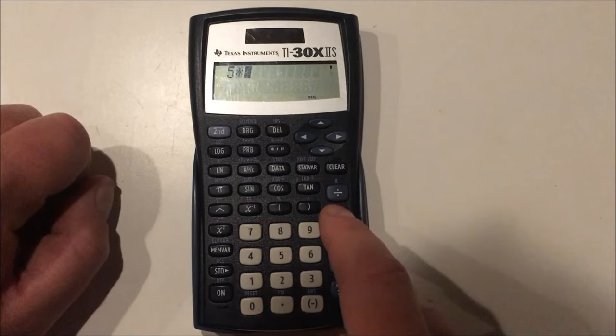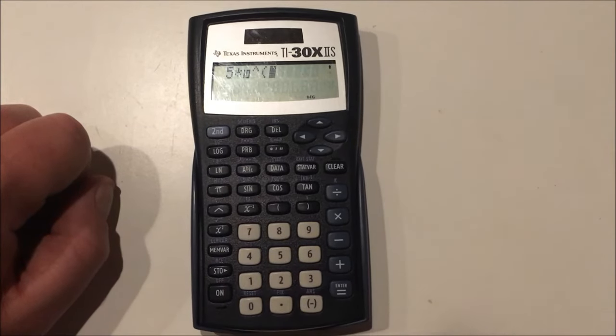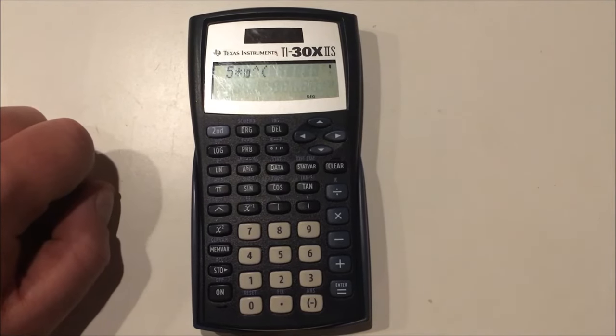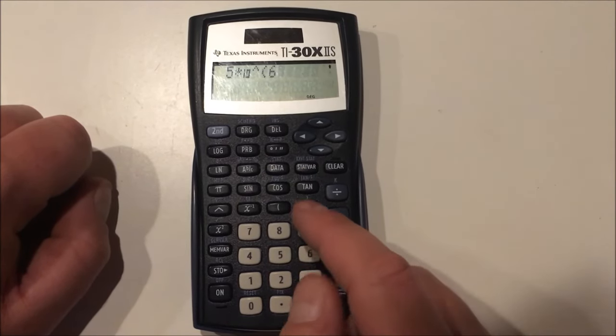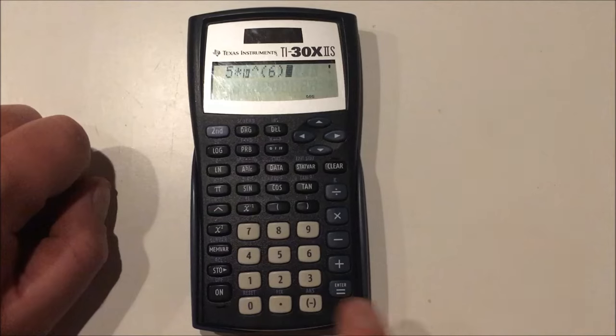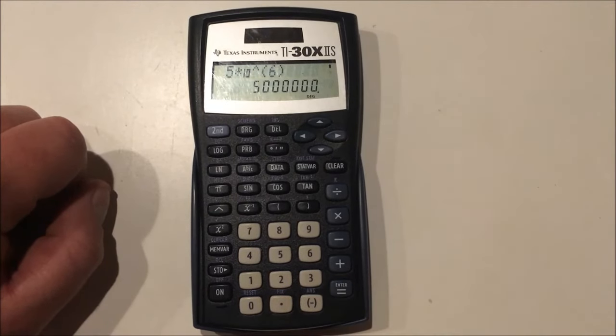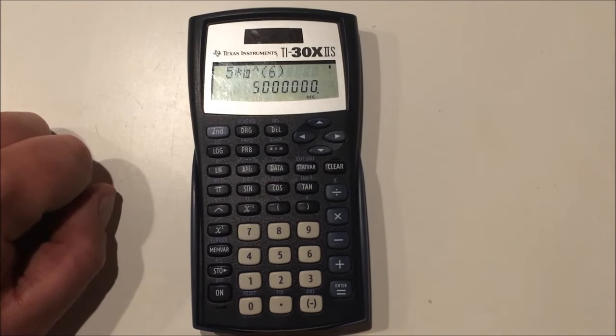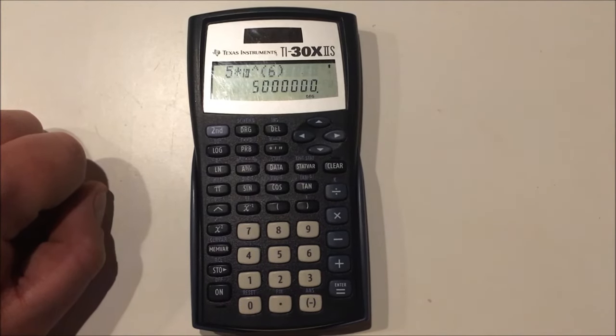And then we just place the 6 in there, and as I said, get in the habit of closing your parentheses. As you can see, it pops out 5 million. There's another way to do scientific notation, however, and that is this x to the negative 1 button. The second feature of that is ee.